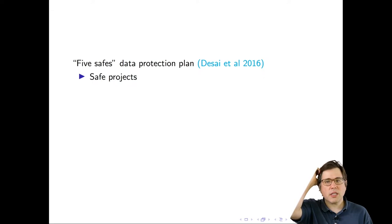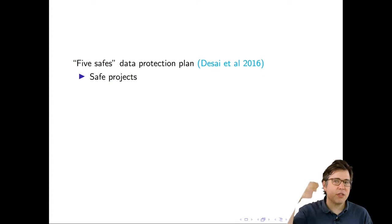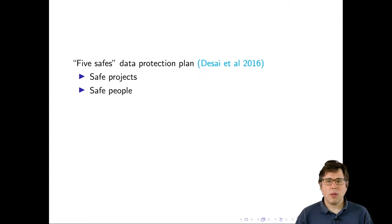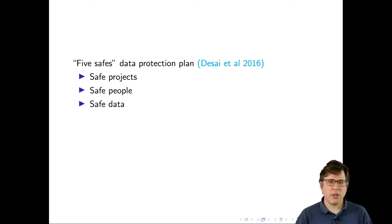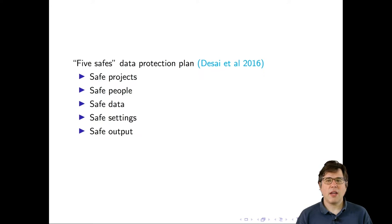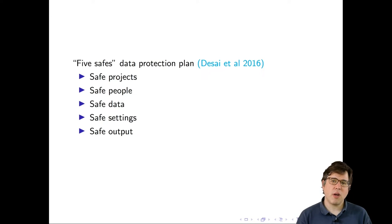The five safes are: first, safe projects — projects with goals that are ethically permissible and responsible; second, safe people — everyone with access to the data has undergone appropriate training and has good intentions; third, safe data — don't store information that's not needed, get rid of as much as possible before working with your data set; fourth, a physically safe setting; and fifth, safe outputs — ensure it's not possible to identify people from the outputs of the research itself.